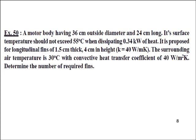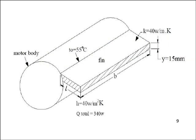The motor body is at 55°C with surrounding temperature 30°C, and we must find the number of required fins. The fin dimensions (length, width, thickness), thermal conductivity of 40 W/m·K, and Q_total of 0.34 kW (340 W) are all given. This is a case of a fin with finite length where heat dissipation also takes place from the tip — Q_conduction = Q_convection — which is Case 3.